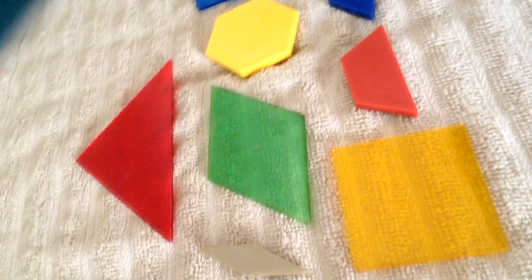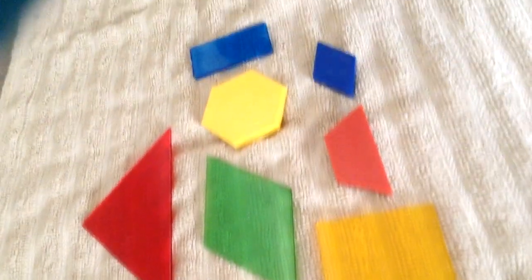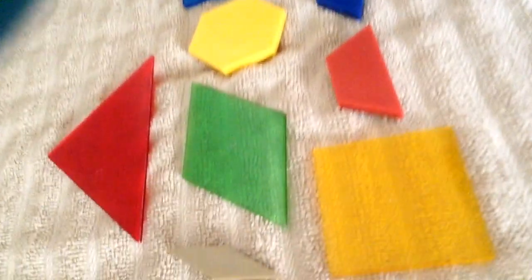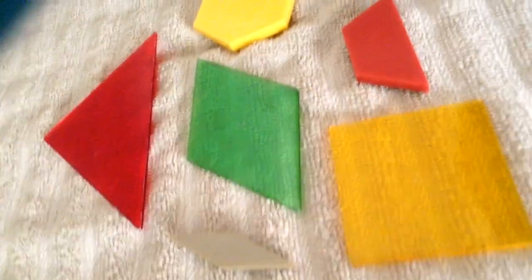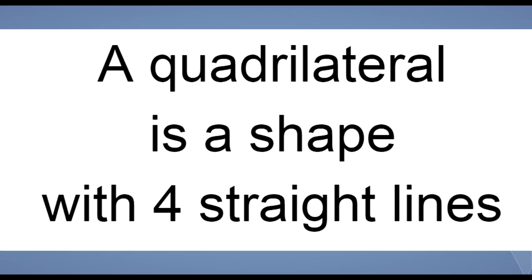So let's start with the word polygon. All of these shapes are polygons. A polygon is a shape with straight sides. Quadrilaterals have straight sides, so they're polygons.